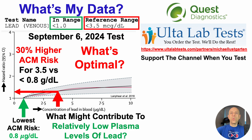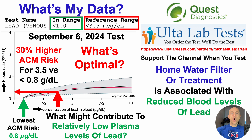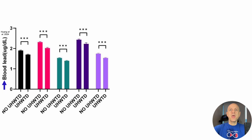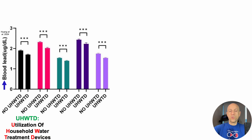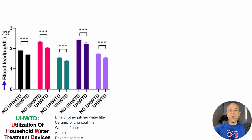Next up is what might contribute to relatively low levels of lead in blood or plasma. One factor might be home water filter usage, or home water treatment, which is associated with reduced levels of lead in blood — shown here on the y-axis. On the x-axis we have groups based on Utilization of Household Water Treatment Devices (UHWTD). These included Brita or other water pitcher filters, ceramic or charcoal filters, water treatment including water softeners or aerators, and also reverse osmosis.